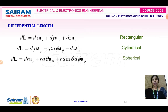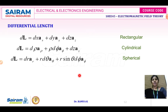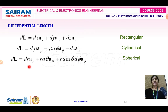For the spherical coordinate system, the differential elemental length is DL = DR·AR + R·Dθ·Aθ + R·sinθ·Dφ·Aφ. This is the formula for the spherical coordinate system. Depending upon the analysis asked in the problem, you can use the appropriate differential elemental length formula.